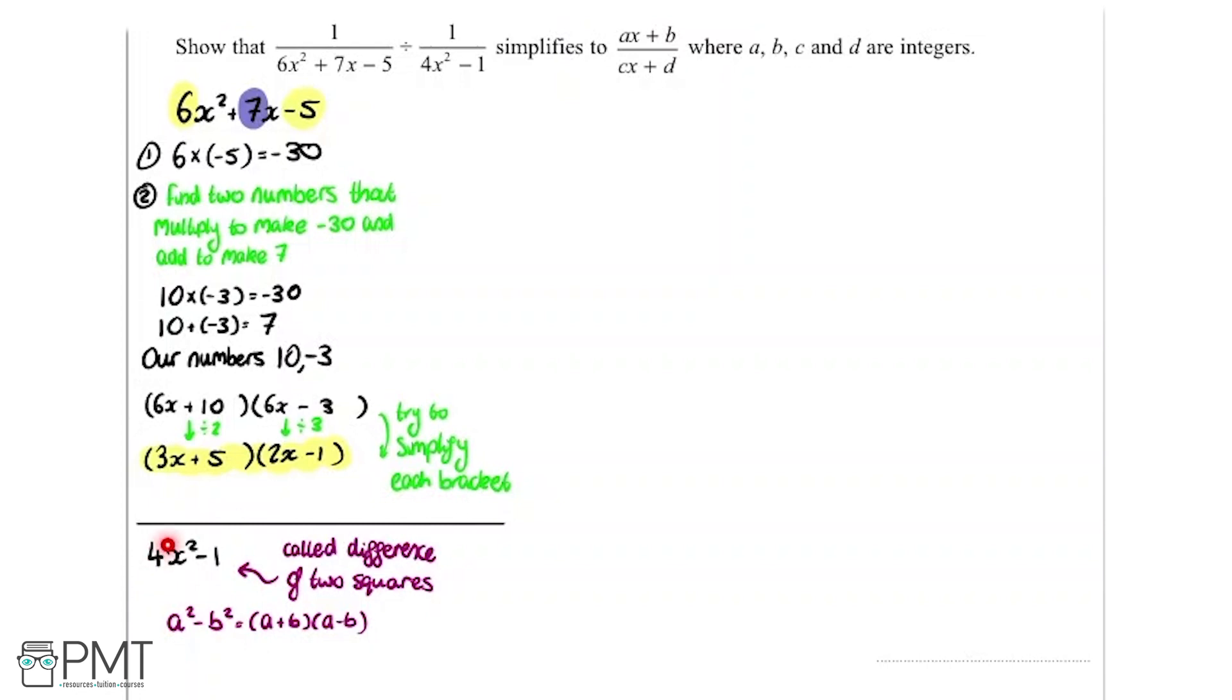So if we take the first term here, I can rewrite that as 2x all squared. And look at our second term, we've got minus 1 all squared. So if we have a is 2x, our b is 1.